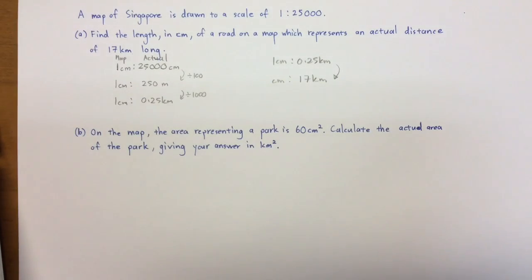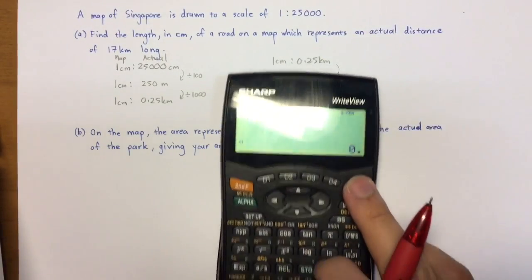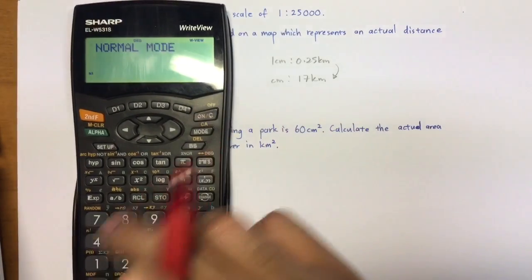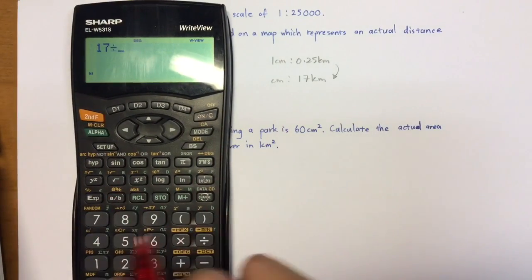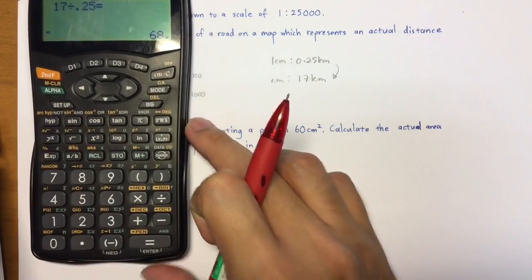In this case, actually, you could just do a quick calculation using a calculator. So what do I key into my calculator? You actually first press 17 divided by 0.25. What's the value? 68.